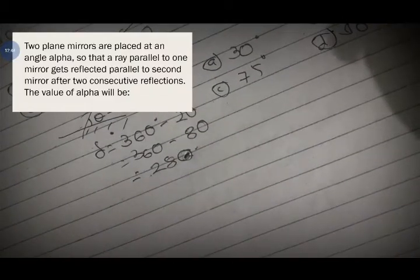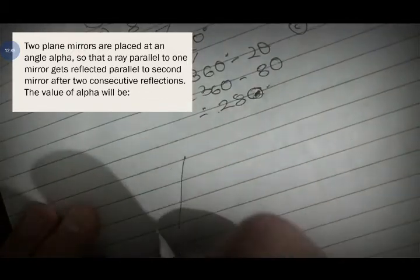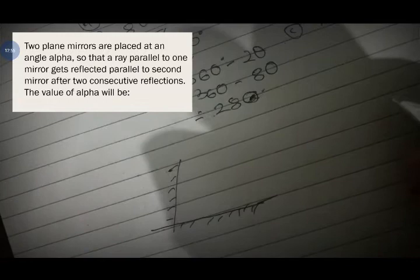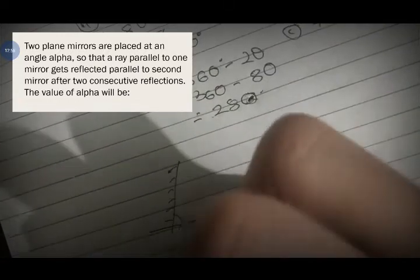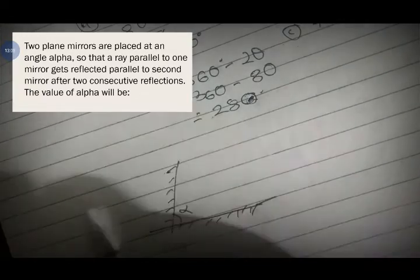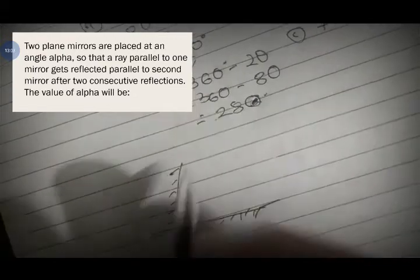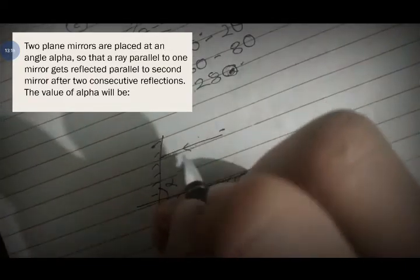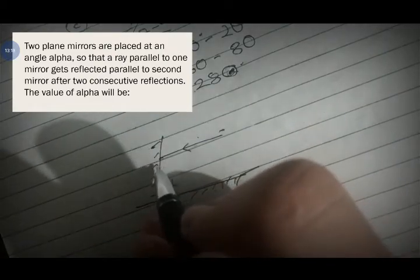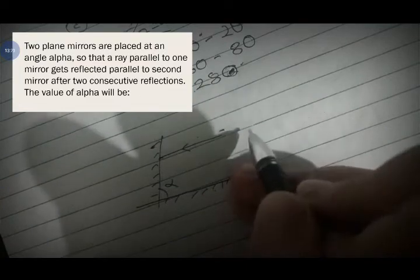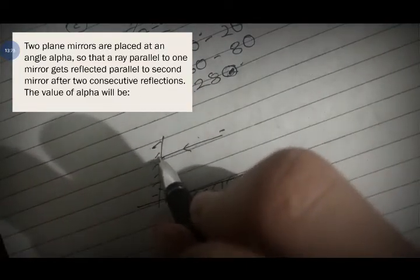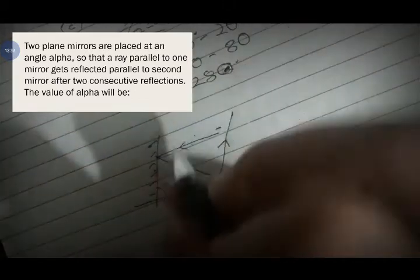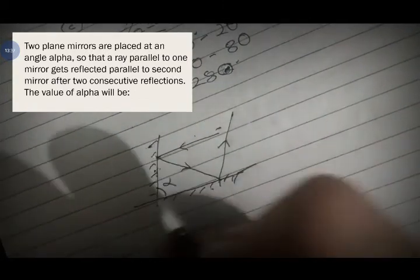Two plane mirrors are placed at an angle of alpha such that a ray parallel to one mirror gets reflected parallel to the second mirror. Options: 30, 60, 75, or 90 degrees. After two consecutive reflections, the ray must be parallel. We draw the normals to each mirror.